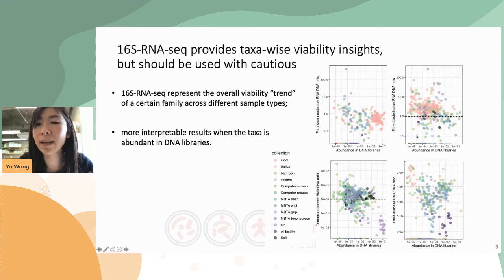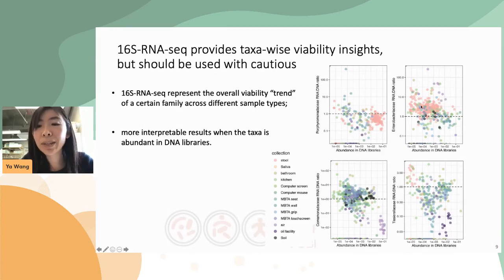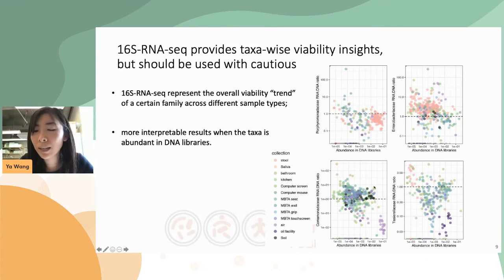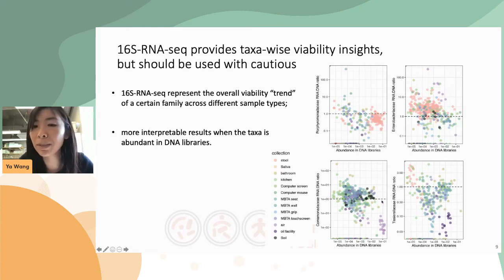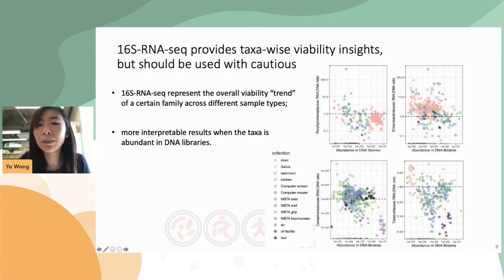We can see that 16S RNA-seq represents an overall trend in the viability of certain families. For example, the Enterobacteriaceae, whose ratio is mostly above 1, is likely to be more active compared to the Lachnospiraceae in stool samples, whose ratio is mostly around or below 1. The Corynebacteriaceae and Tissierellaceae — both human commensals commonly found in built environments — show that Tissierellaceae is likely less active in oil samples, while Corynebacteriaceae is likely less active in indoor air samples.